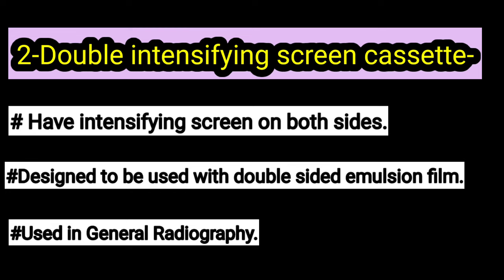The double screen cassettes have two intensifying screens, so they use double-sided emulsion film. They are used in general radiography, while single intensifying screen cassettes are used in mammography. As you can see in this image, this is a double screen cassette with two intensifying screens and double-sided emulsion film.